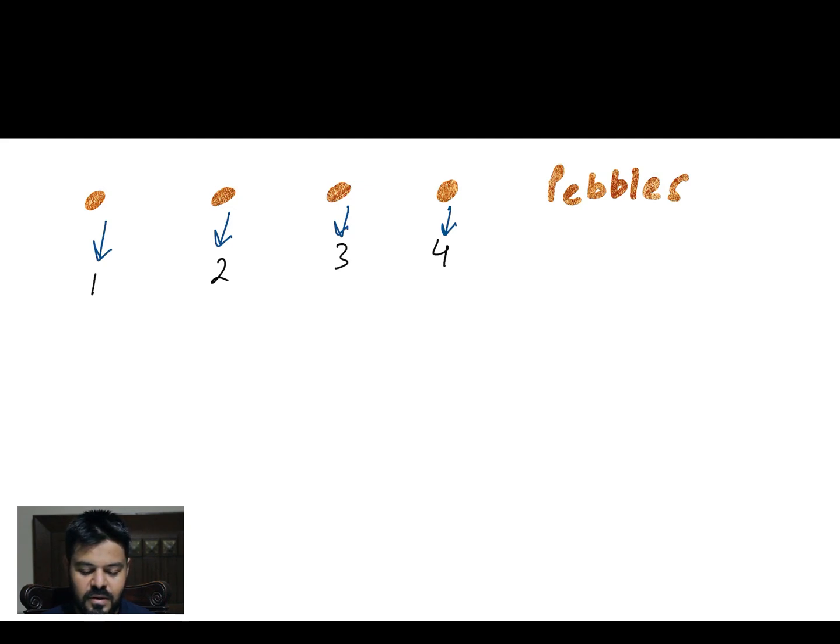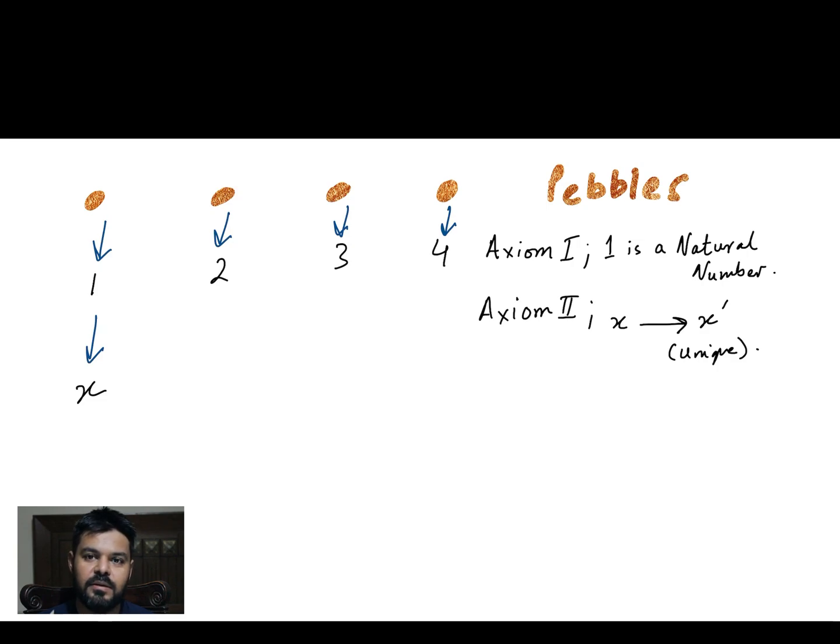Now let's see how our axioms can help us in development of such a number system. Our Axiom 1 states that 1 is a natural number, so we have one such number which can help us enumerate these pebbles. 1 is a number and it can help us in enumeration of the first pebble. But what about the other pebbles? Our Axiom 2 states that each number has a unique successor. We can use this successor to enumerate other pebbles as well.